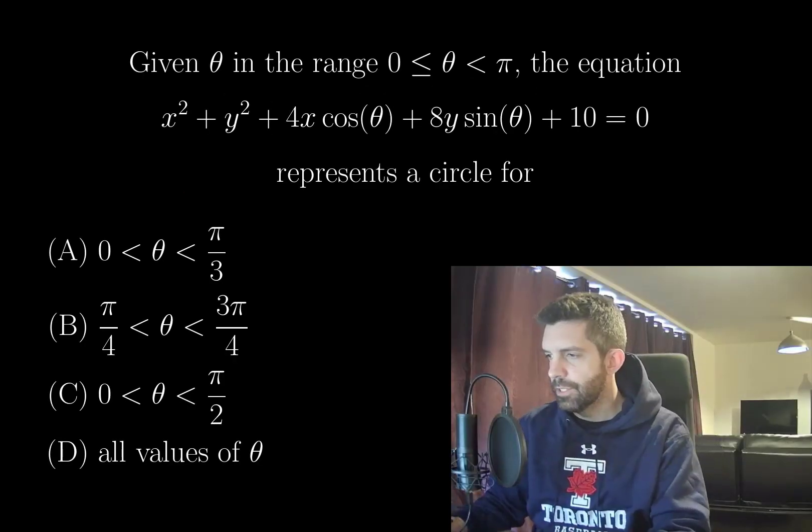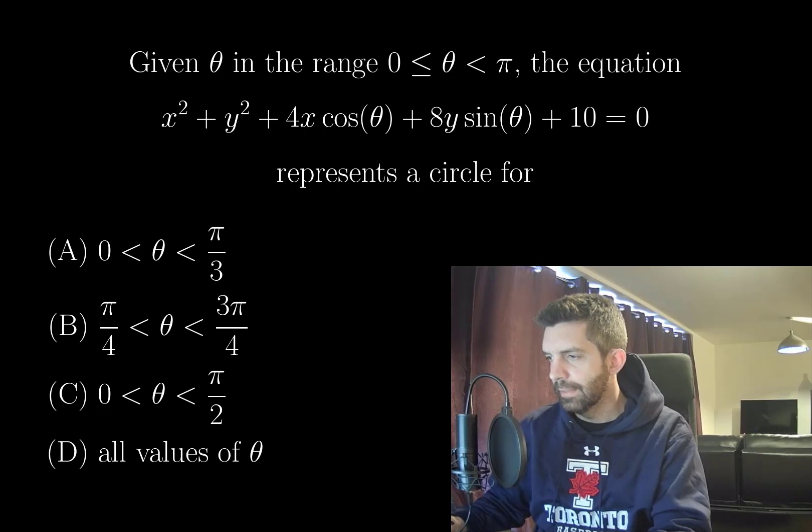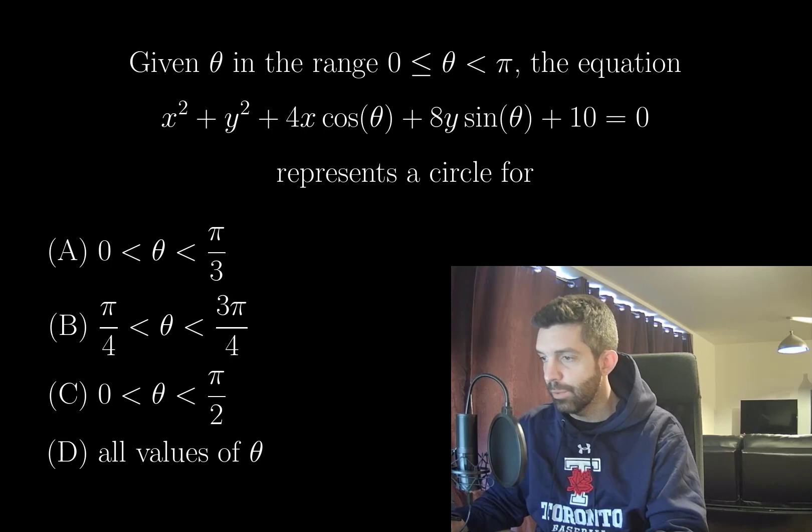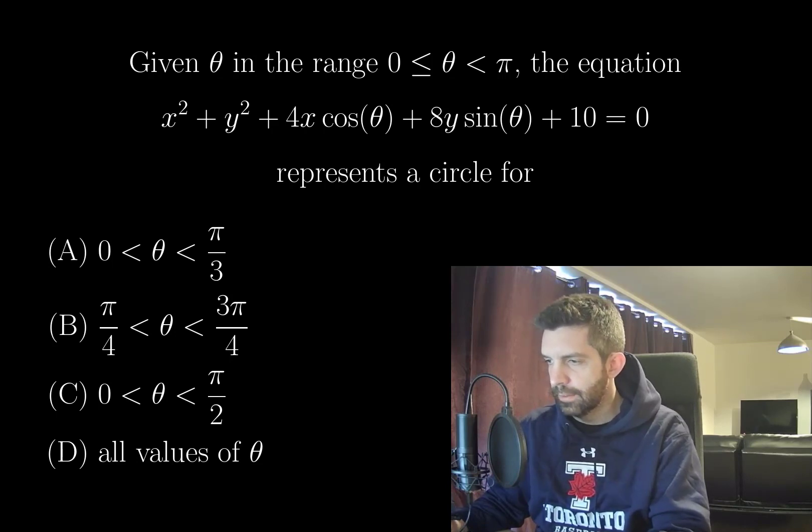Given theta in the range 0 ≤ θ < π, the equation x² + y² + 4x cos(θ) + 8y sin(θ) + 10 = 0 represents a circle for various values of theta.